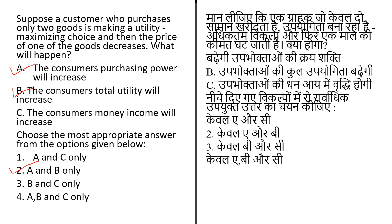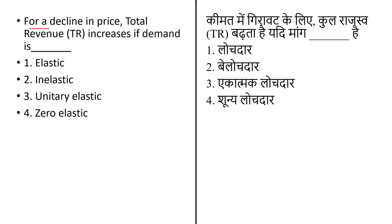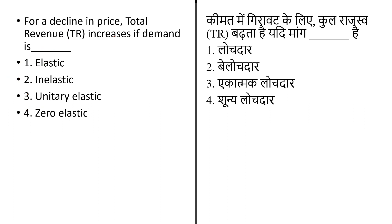Next question: for a decline in price, total revenue (TR) increases if the demand is — options: elastic, inelastic, unitary elastic, or zero elastic. Total revenue is the total receipt a seller can obtain from selling goods or services to the buyer, written as P multiplied by Q. The correct answer is option 1, that is elastic — for a decline in price, TR increases if the demand is elastic.